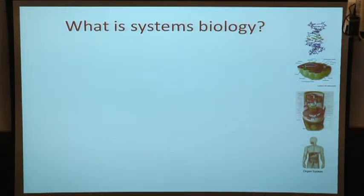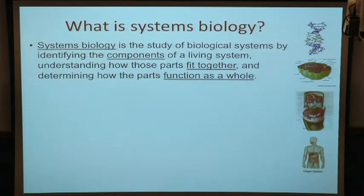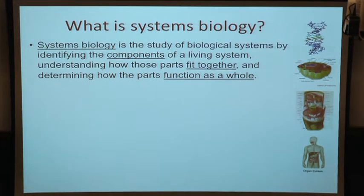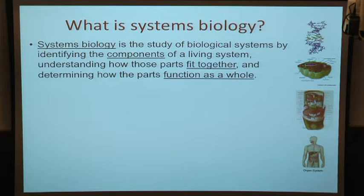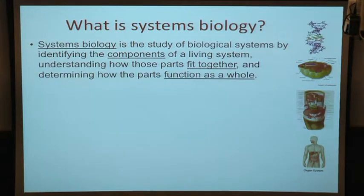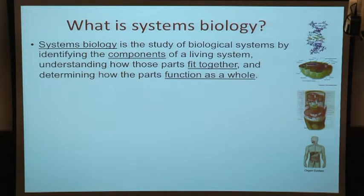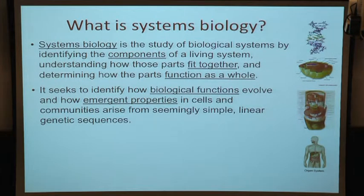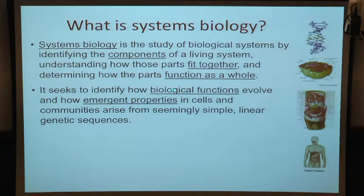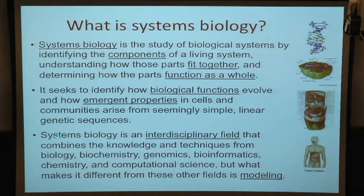In systems biology, we're focused on understanding how a system works by putting the components of that system into a whole, usually in the form of a computational model. Metabolism is one of the really nice areas where we can do this at some depth because we can leverage decades of work on biochemistry to build integrated models. We also seek to identify how biological functions evolve and how emergent properties in cells or communities arise from these component parts.